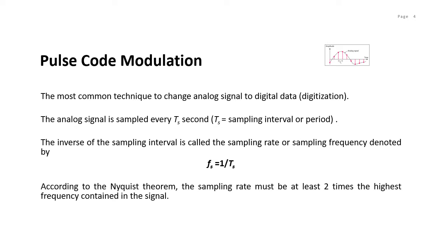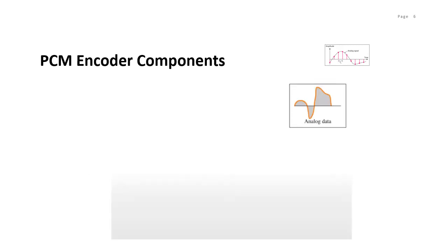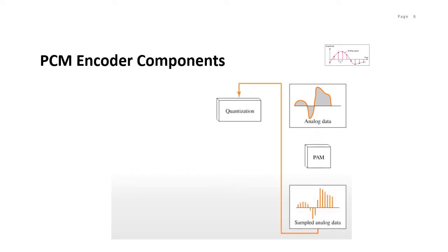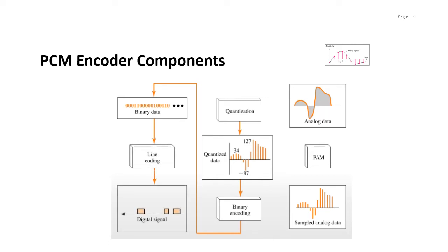As you can see in this figure, we have the components of the PCM encoder. The analog signal is sampled, then the sampled signal is quantized, and the quantized values are then encoded as streams of bits. This will become digital data, which can later be encoded into a digital signal. This animation summarizes pulse code modulation at the encoder: we have analog data, we sample it through pulse amplitude modulation, the sampled analog data is quantized, and from there we can do binary encoding, which can then be encoded using line coding to produce the digital signal.